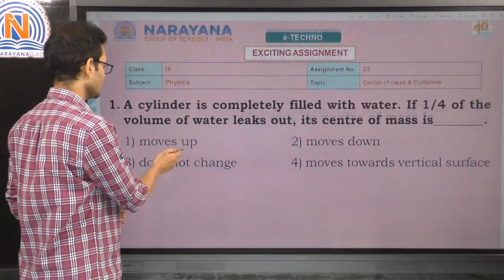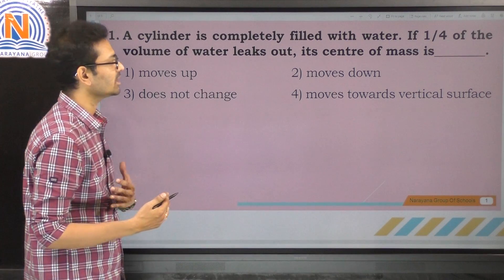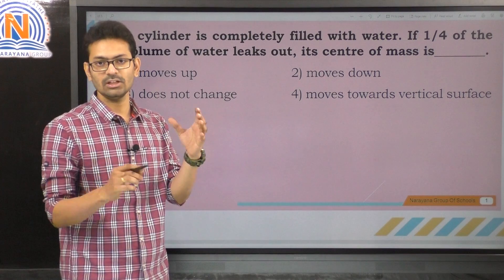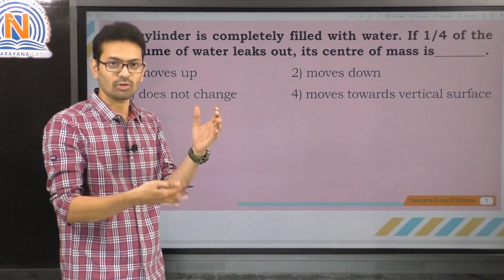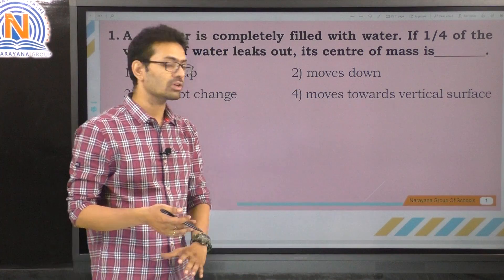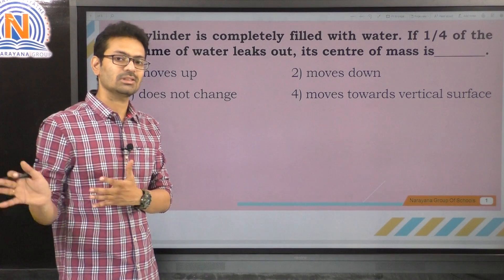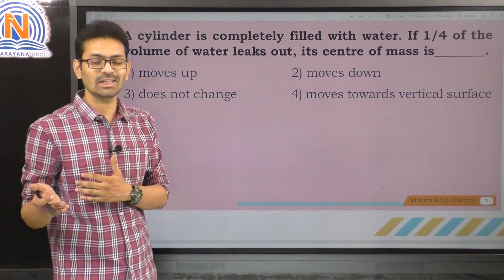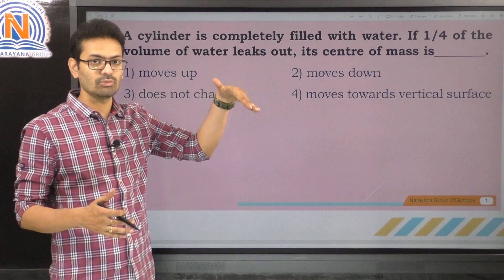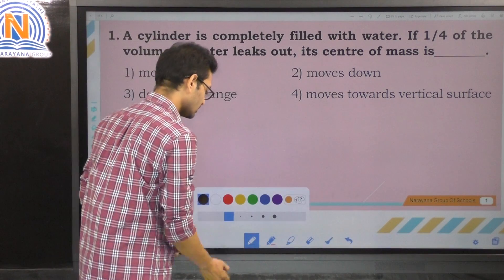The first question: a cylinder is completely filled with water. You take a cylinder, fill it with water, and suddenly put a hole under it so water flows out. When 1/4th of the water has leaked outside, the center of mass obviously comes down. So it moves down, and the answer is option 2.